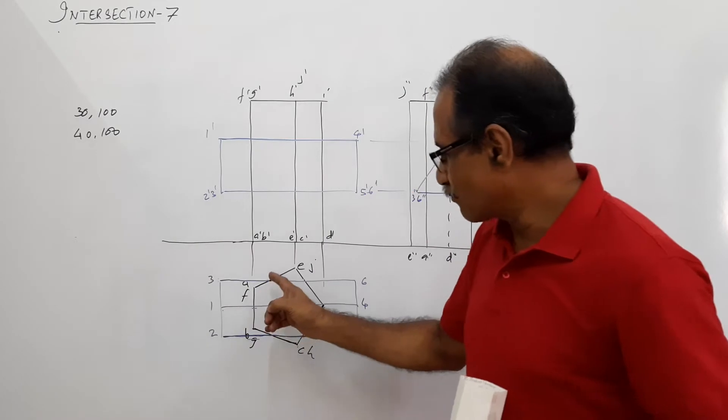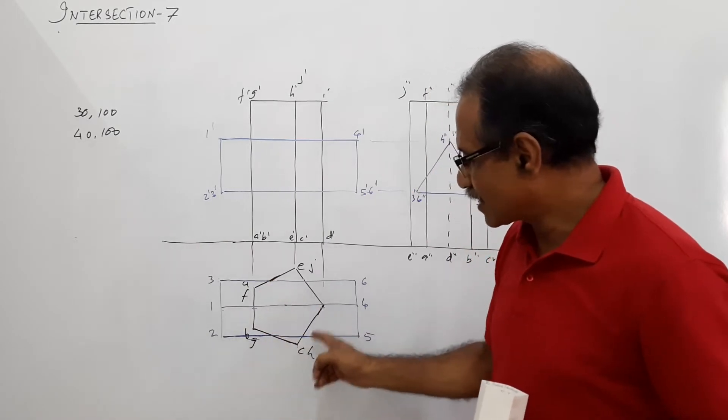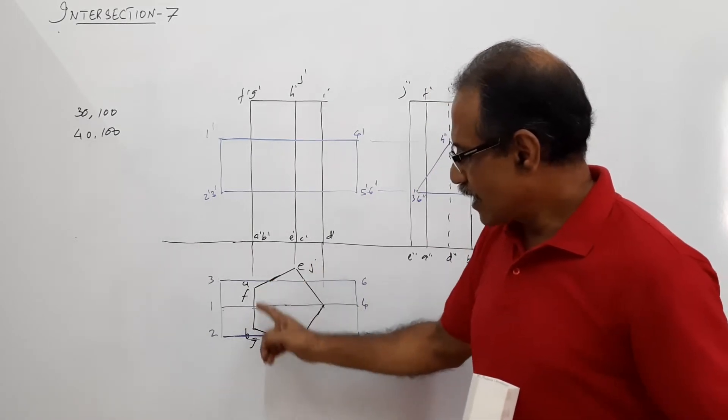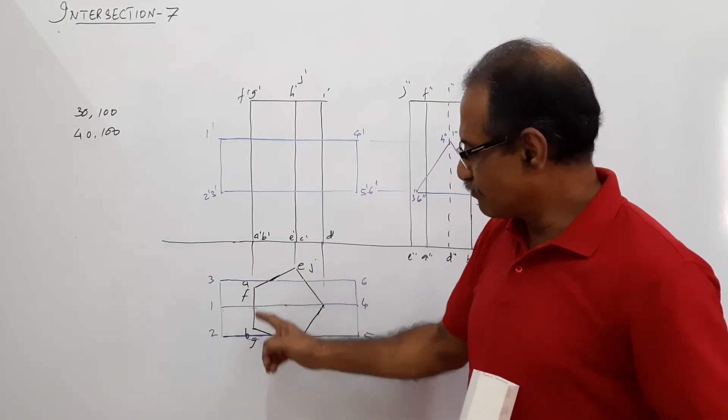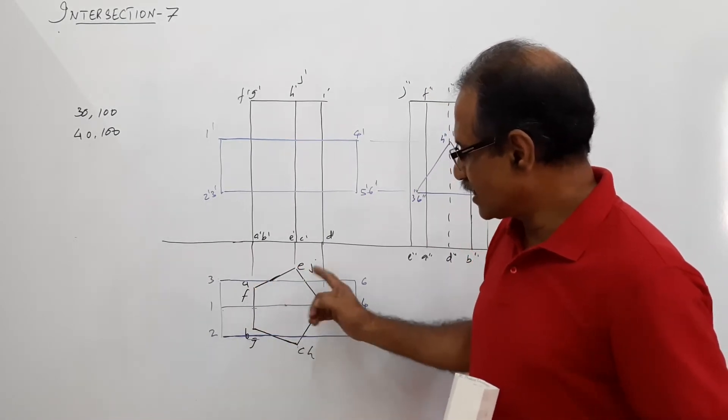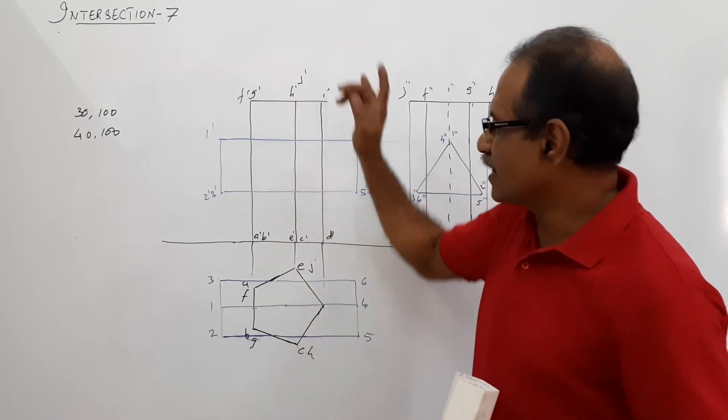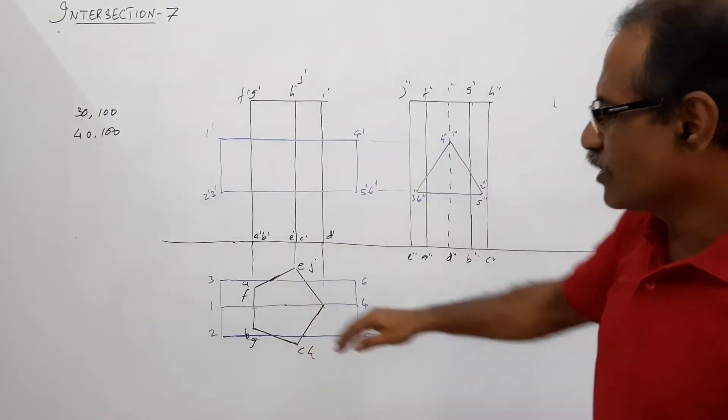I have drawn the plan of the pentagon in black, labeled A, B, C, D, E, F, G, H, I, J. We have the plan, elevation, and also an end view.